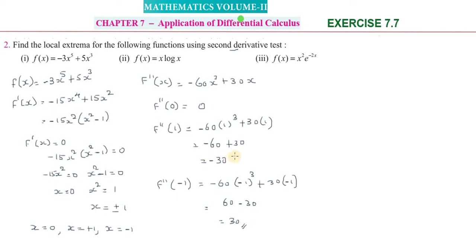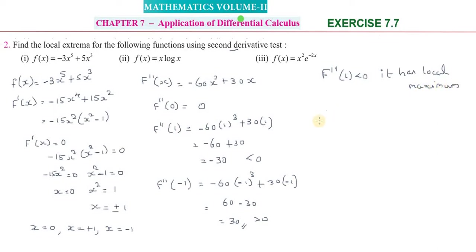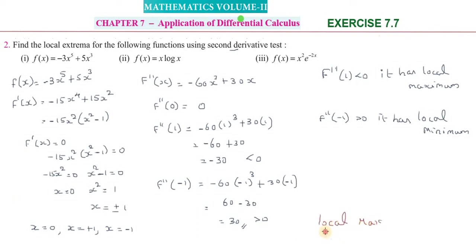Since f''(1) = -30, which is less than 0, x = 1 gives a local maximum. Since f''(-1) = 30, which is greater than 0, x = -1 gives a local minimum. A negative second derivative means local maximum; a positive second derivative means local minimum.